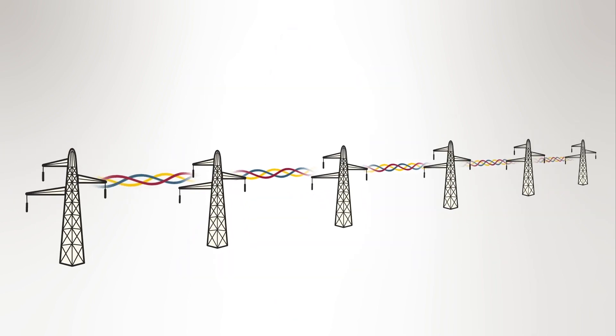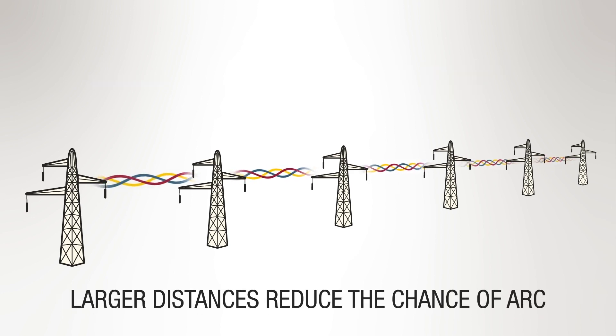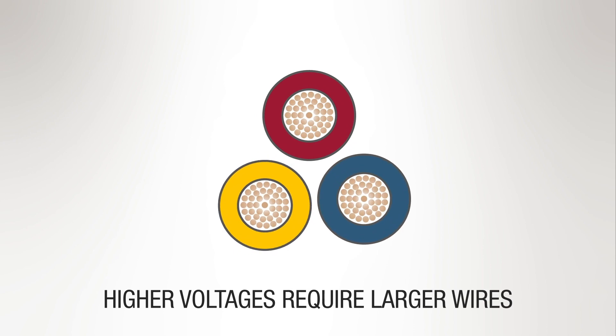A general rule of thumb is that 1,000 volts are required for each 1.6 kilometers or 1 mile of distance to move the power. Transmission voltages can reach over 700,000 volts. Higher voltages require larger distances between the phased wires to reduce the chance of an arc. Higher voltages also require larger diameter wires.